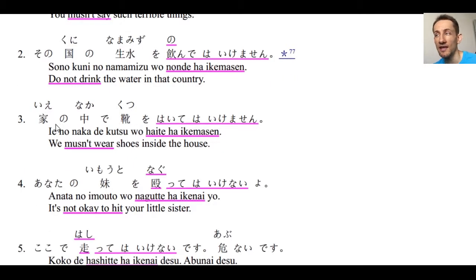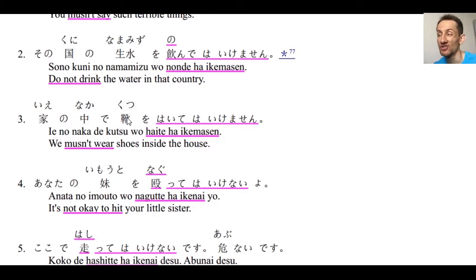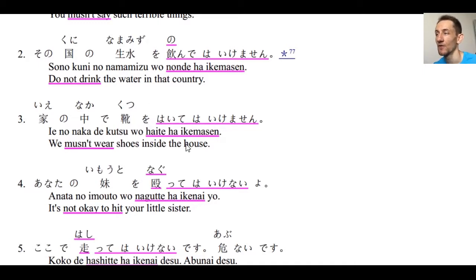Number three: you mustn't wear shoes inside the house. We have kutsu for shoes, and when we talk about wearing shoes, we use the verb haku. In Japanese there are different verbs for wearing a hat, wearing shoes, or wearing a shirt. When you wear something on your feet, use haku. Kutsu wo haite wa ikemasen.